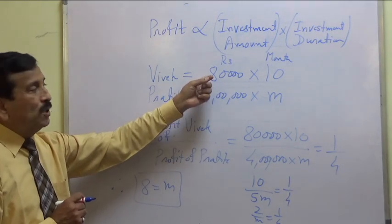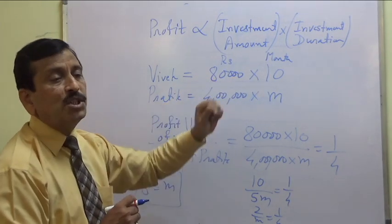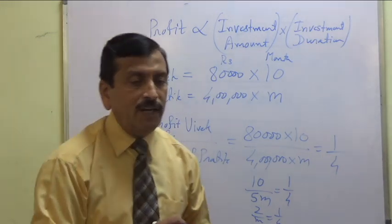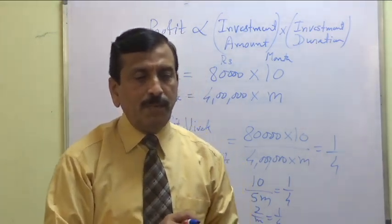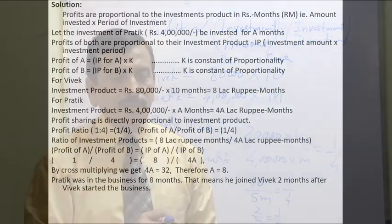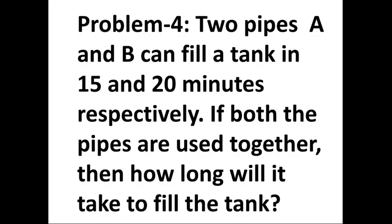Though Vivek goes for 10 months, his amount is one-fifth of Pratik's, and therefore his share will be proportionally lower. See the solution part carefully and we move to the next problem.